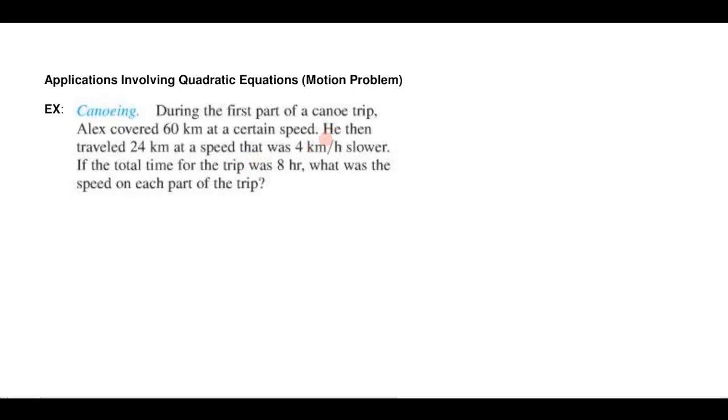So let's start off with the most important thing of every word problem and that's to identify your variables, the things that we don't know. Now a good place to start is with what the problem asks us. And it says what was the speed on each part of the trip? And we know that there's two parts of the trip. So let's let x be the speed during the first part of the trip.